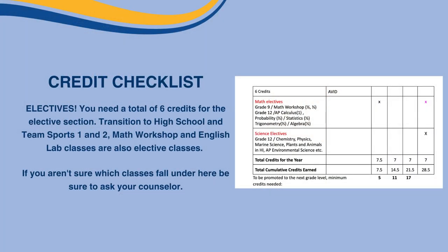Lastly, for the rest of your classes, they're under electives. You'll need a total of six elective credits for the elective section. Transition to high school, team sports one and two, math workshop, and English lab classes are also elective classes. If you aren't sure which classes fall under here, be sure to ask your counselor.